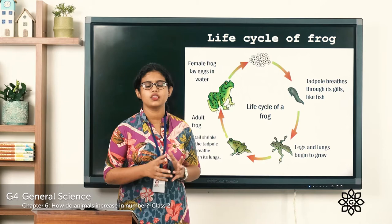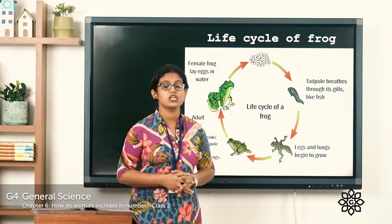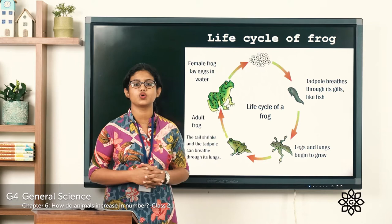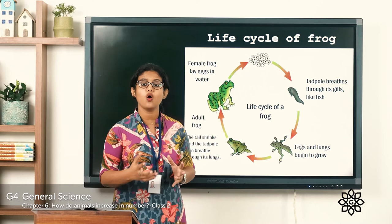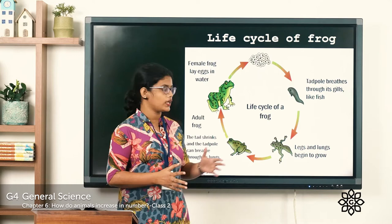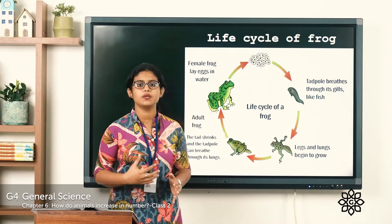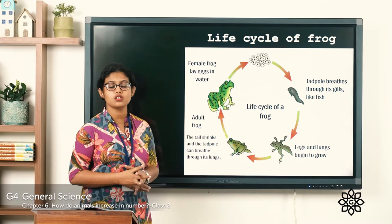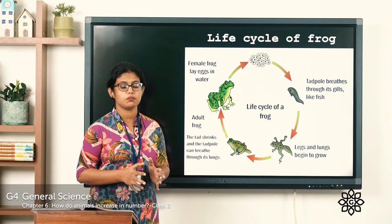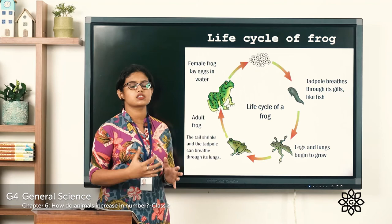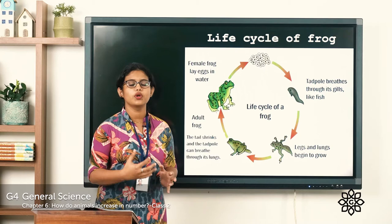The next stage is the froglet stage. During this stage their lungs begin to grow so that they will be able to breathe out of water — we know that frogs live on land as well as in water. At the same time their legs begin to grow, and gradually their long tail becomes shorter and shorter until it disappears. They start breathing through their lungs.